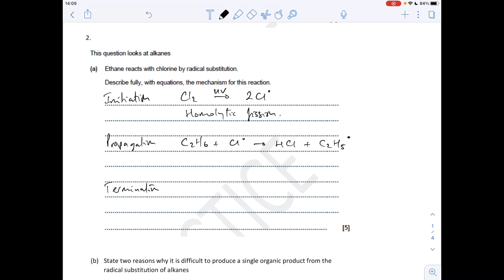The second propagation step is where this new radical C2H5 dot reacts with a chlorine molecule, and it becomes C2H5Cl and you get another chlorine radical formed. For the termination steps, you just take any two radicals and combine them. Something like two Cl radicals will be fine - that'll give you Cl2.